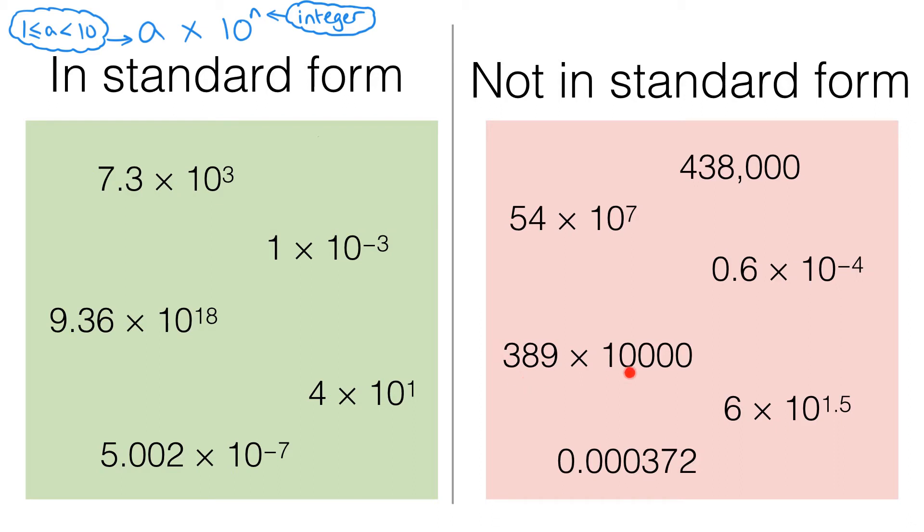In this one we've got two problems. 389 is way too big. We want a to be less than 10, remember, and still greater than or equal to 1. And the other problem is that we've got this number 10,000 here. It's not expressed in the form 10 to the power of n.